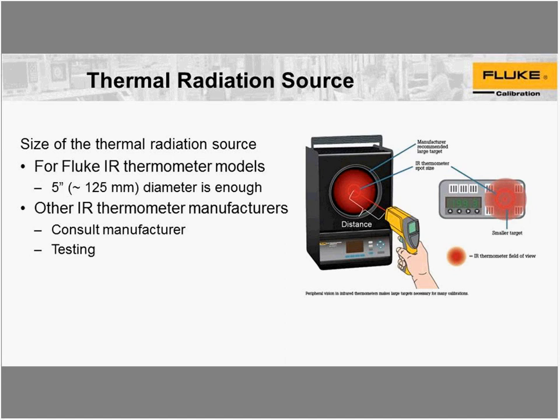For any Fluke IR thermometer model, 5 inches or 125 millimeters diameter is enough for the calibration. We don't just use the spot size — there is stray radiation that comes from outside the field of view of the infrared thermometer. It's well known that when the field of view is specified, 90% of the radiation the IR thermometer reads comes within the circle; the other percent comes from outside, and this is scatter. We know that for Fluke IR thermometer models, 5 inches or 125 millimeters is enough. If you use a smaller target, you risk some radiation coming from outside, which will be either an uncertainty or an error in your calibration.